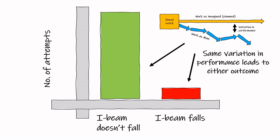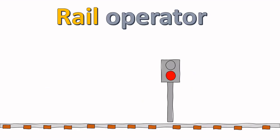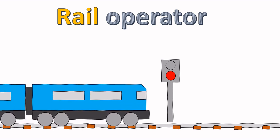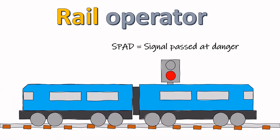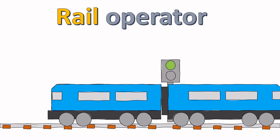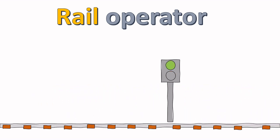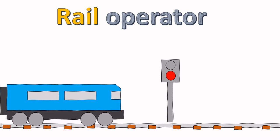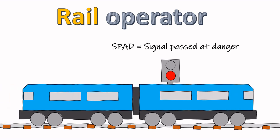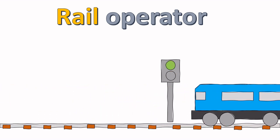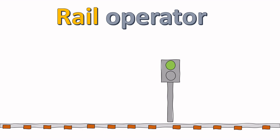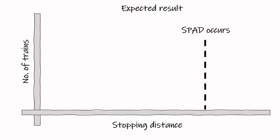This approach has been taken in the rail industry to address signals passed at danger. When the next section of track is not clear, a train driver must stop before passing a red signal, or risk colliding with another train further up the line. When a train passes a red signal, this is called a SPAD. A train operator wanted to know if there were clear differences between drivers that passed red signals and those that didn't, so they decided to measure the stopping distance of each train after encountering a red signal.